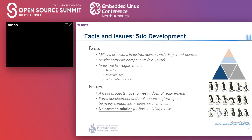Now, there are millions or trillions of civil infrastructure devices which are using similar software components like Linux. They share the same industrial requirements — security, sustainability, and industrial grade. They should keep satisfying those requirements during their life cycles, which are usually very long. Therefore, super long-term maintenance becomes a key. However, there were no common solutions for base building blocks of civil infrastructure, so the same development and maintenance efforts had to be spent separately, even within the same companies.